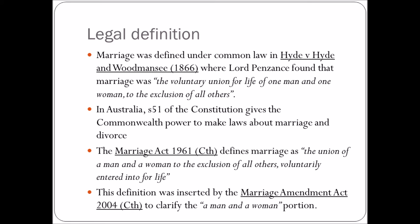Now in Australia, Section 51 of the Constitution gives the Commonwealth the power to make laws about marriage and divorce. That means they passed the Marriage Act 1961, which defined marriage as the union of a man and a woman to the exclusion of all others, voluntarily entered into for life — pretty much the same definition as in 1866.